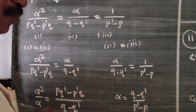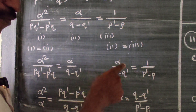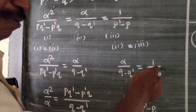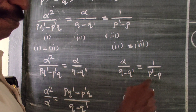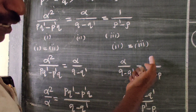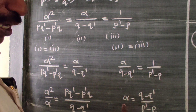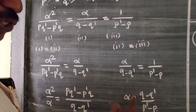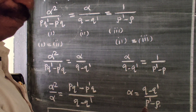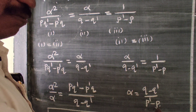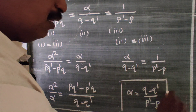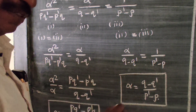Alpha squared is equal to alpha by Q minus Q dash, which is equal to 1 by P dash minus P. So from this, alpha is equal to Q minus Q dash, divided by P dash minus P.